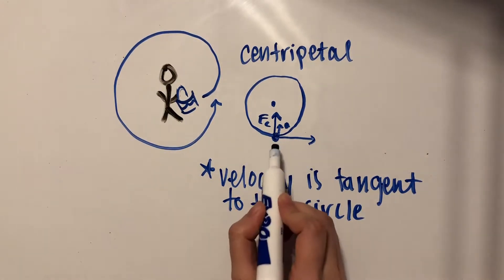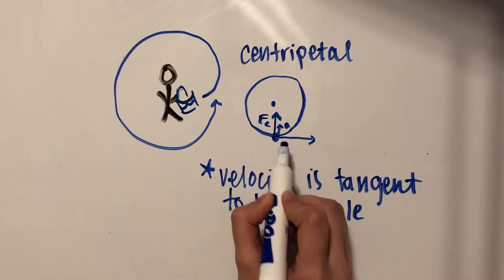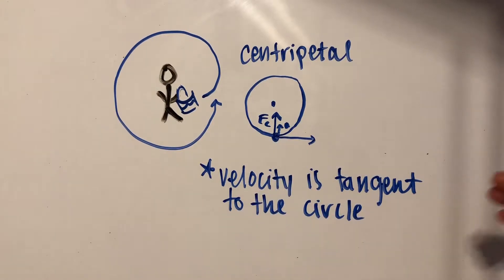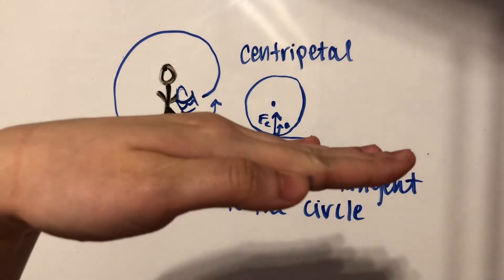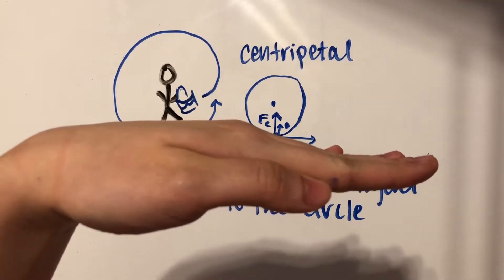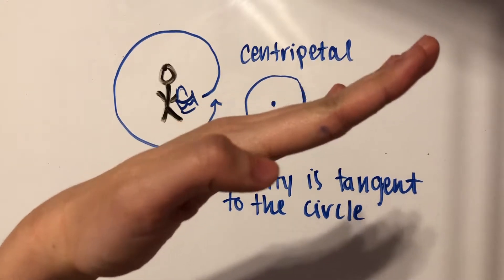It makes sense that its velocity is going to the right and its acceleration is going up, because that means at the next moment in time, its velocity will be shifted up a little bit more.